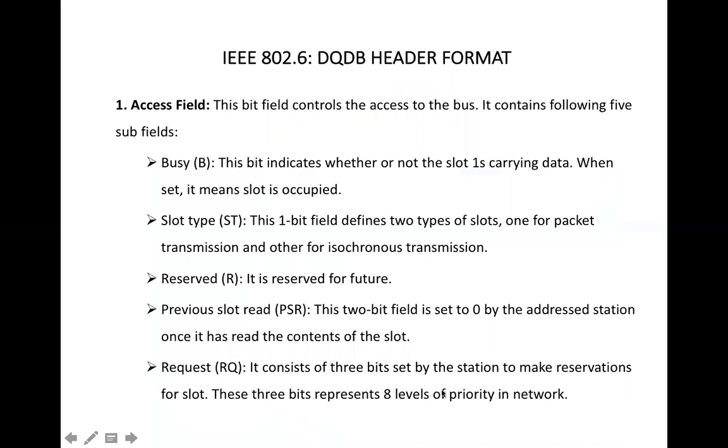The first field is access field. This is basically used to control the access to the bus. How will the access to the bus be controlled? Through the reservation mechanism. If the frame has data copied, then the busy bit will be set. The busy bit means that the cell is occupied. The second is slot type.